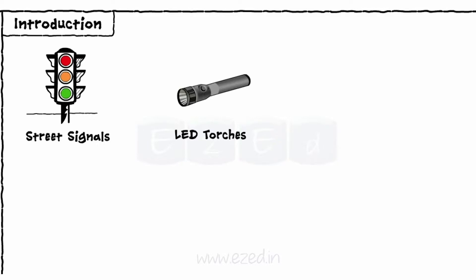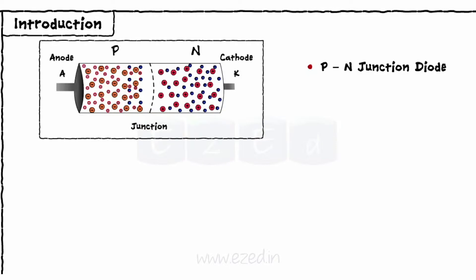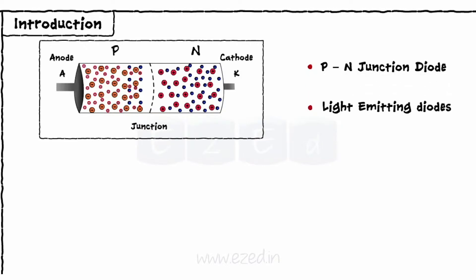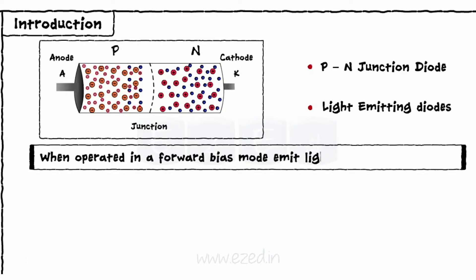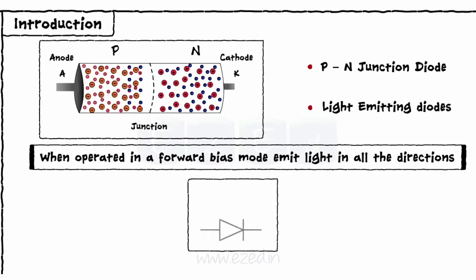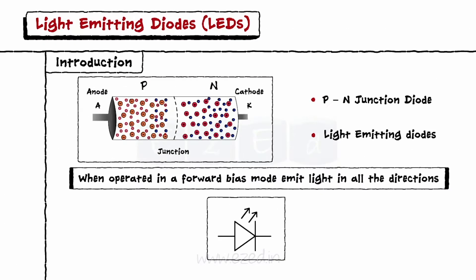We have already studied a PN junction diode. Light emitting diodes are derived from PN junction diodes only. These diodes, when operated in forward bias mode, emit light in all the directions. Thus, the symbol of LED is as shown, with two arrows depicting emission of light.